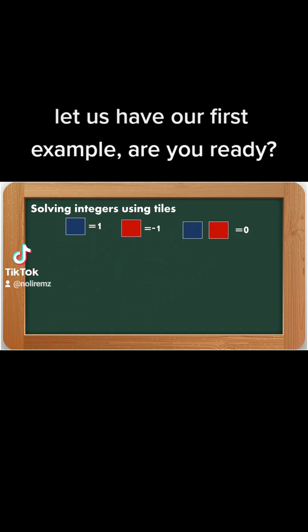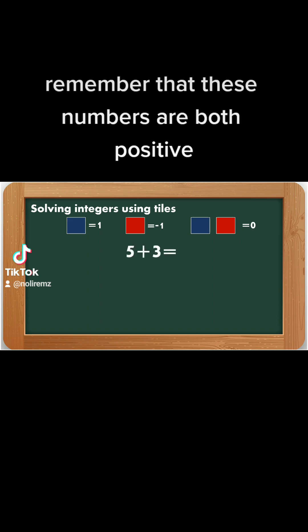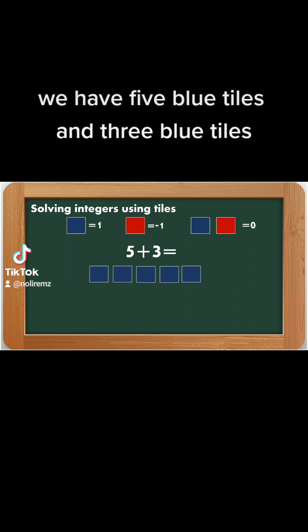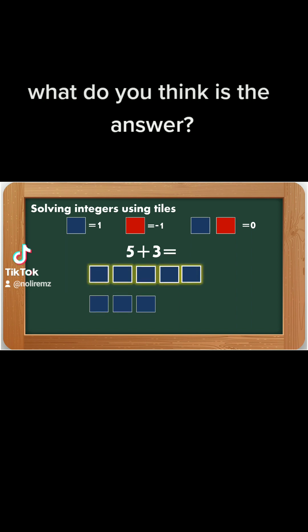Let us have our first example. Are you ready? 5 plus 3 is equal to... Remember that these numbers are both positive. We have 5 blue tiles and 3 blue tiles. So 5 blue tiles plus 3 blue tiles is... What do you think is the answer?